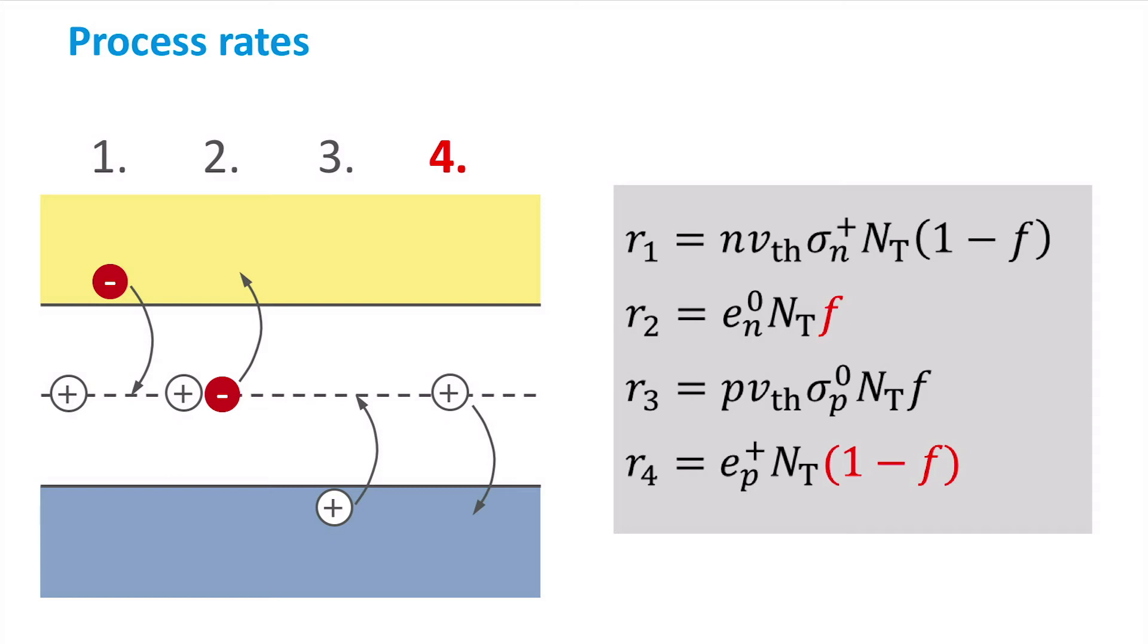The equations presented here are also valid for acceptor-like trap states. The only difference is the charge state. This means that neutral charge states turn into negative charge states, and positive charge states turn into neutral charge states.